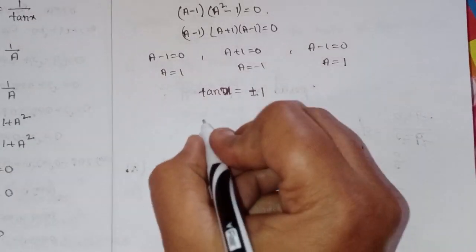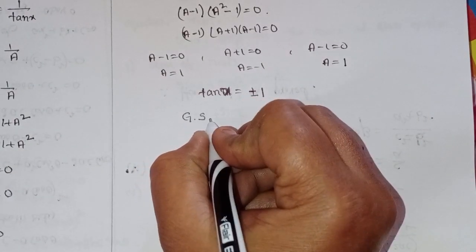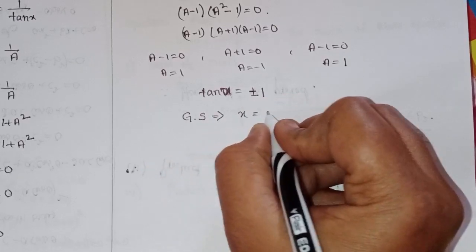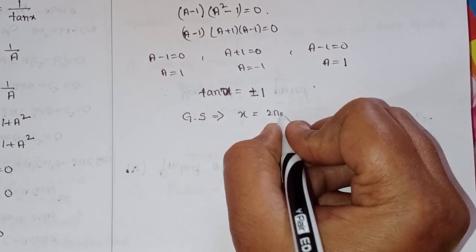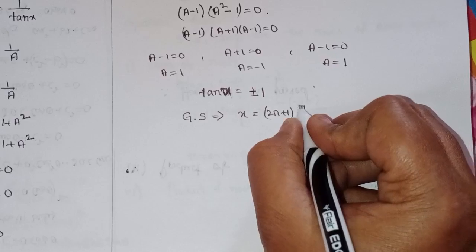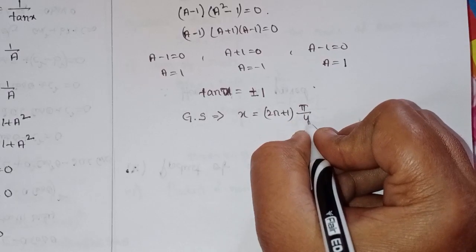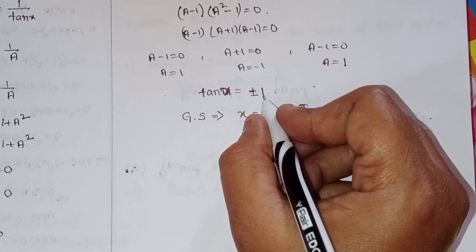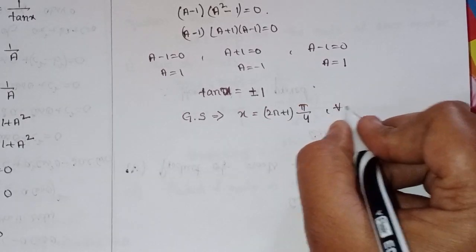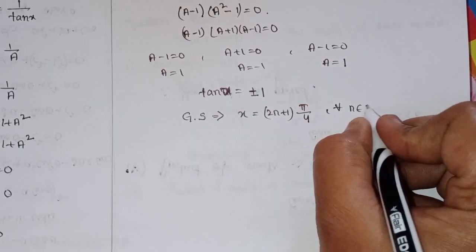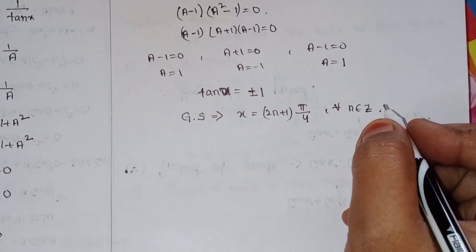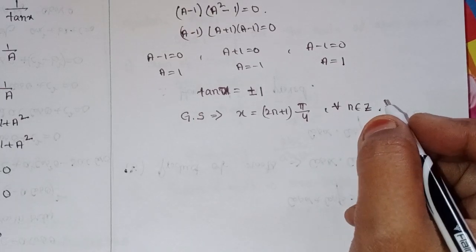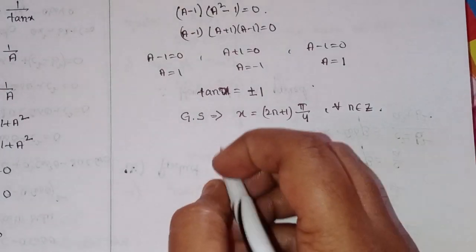General solution: since tan x equals plus or minus 1, which corresponds to pi by 4, the general solution is x equal to (2n plus 1) times pi by 4, for all n belonging to Z.